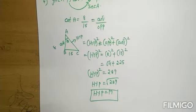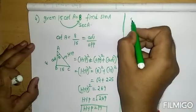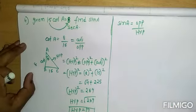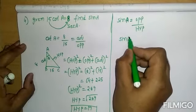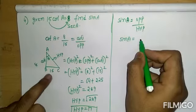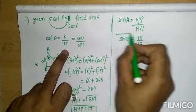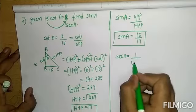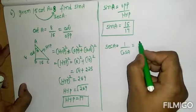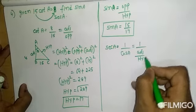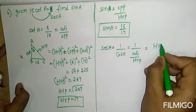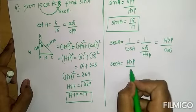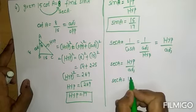Now find sine A: sine A equals opposite by hypotenuse, so sine A equals 15 by 17. Next, sec A is reciprocal of cos. Since cos equals adjacent by hypotenuse, sec A equals hypotenuse by adjacent, which is 17 by 8.